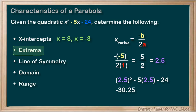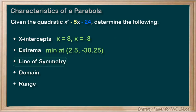We know this is a minimum because the a value of this quadratic is positive, so the quadratic opens upwards. So we have a minimum of y equals negative 30.25. The line of symmetry always occurs at the x value of the vertex, and we just found out that this is x equals 5 over 2, or x equals 2.5.